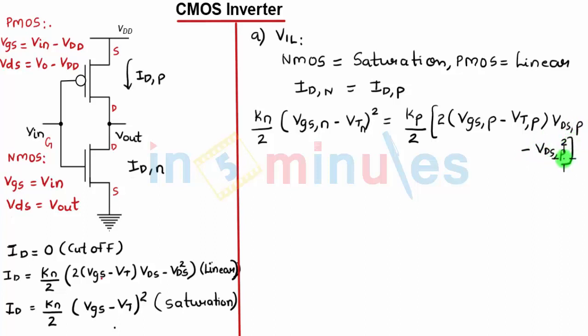Now let's substitute the corresponding VGS and VDS by looking on the left hand side of the screen for NMOS and PMOS respectively. That gives the expression as KN by 2, VIN minus VTN the whole square, equal to KP by 2, twice VIN minus VDD minus VTP. VDSP is Vout minus VDD for PMOS, minus Vout minus VDD the whole square. Let's call this equation star.